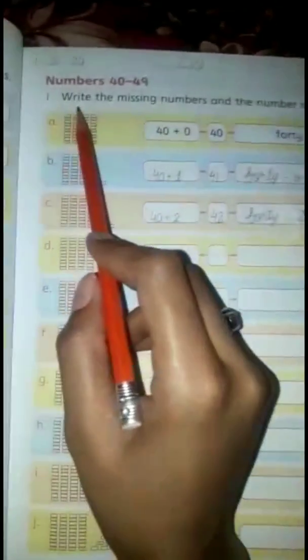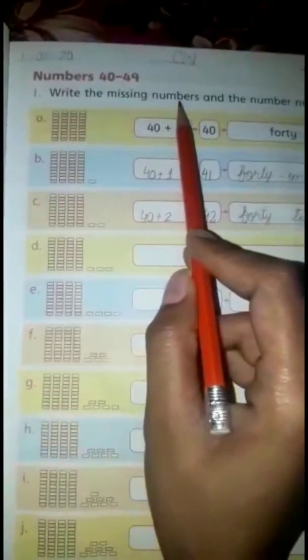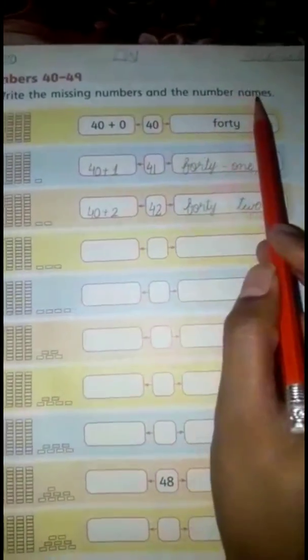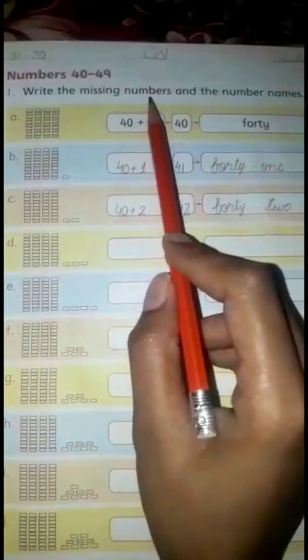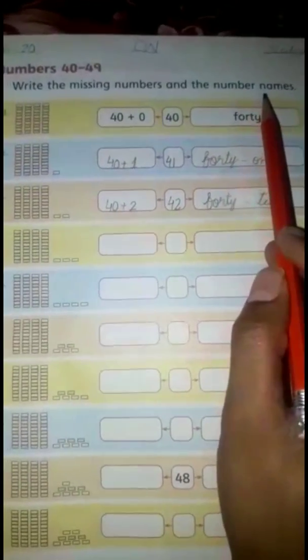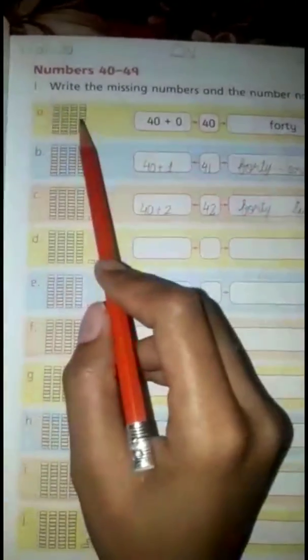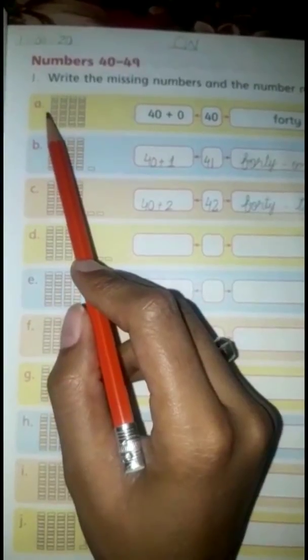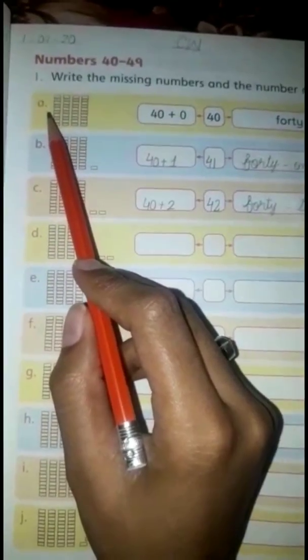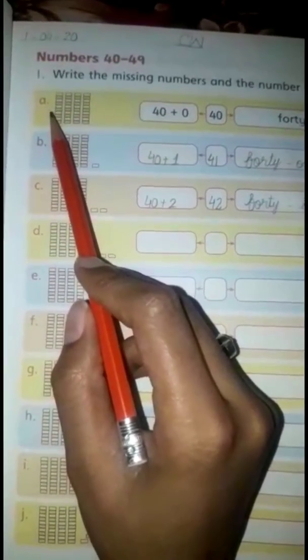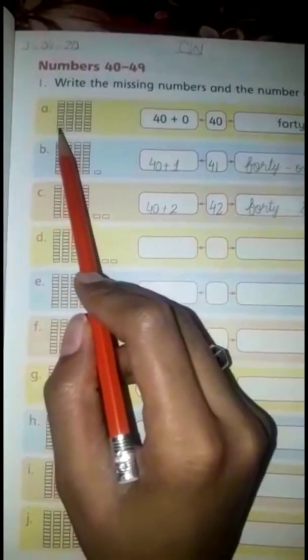CW and dimension, then you have to write the missing numbers and the number names. You have to look at the boxes - there are four stacks.